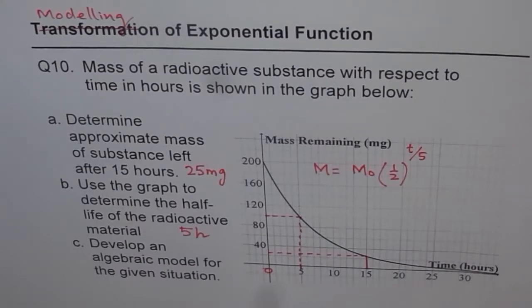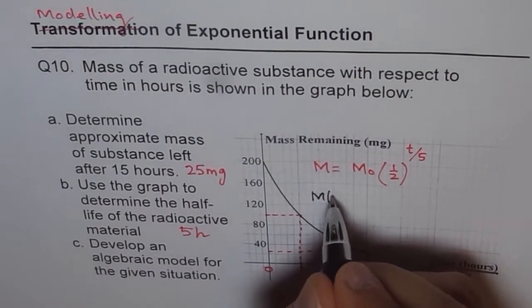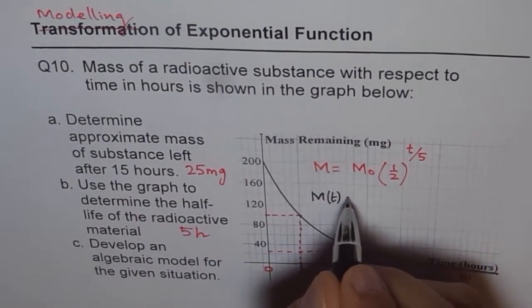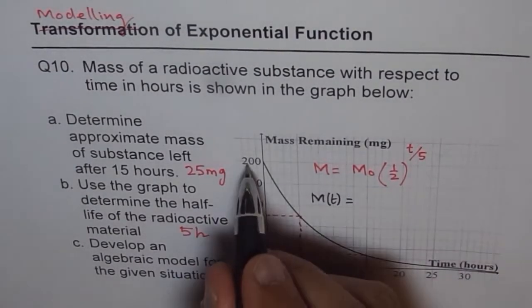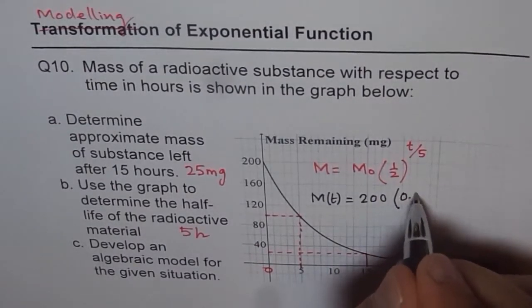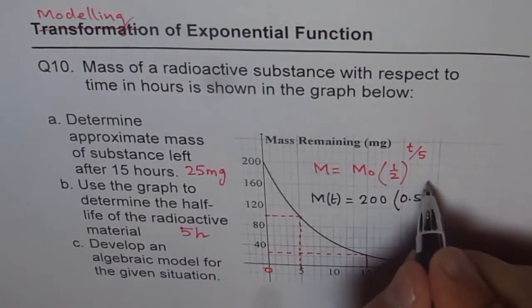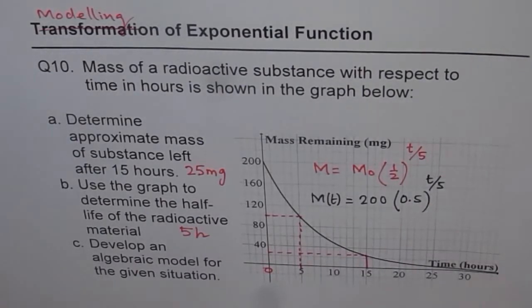So let me write that with the initial mass. We get now mass at any instance of time t as a function of time, which is in hours, equals initial mass of 200 times half, which is 0.5, or half you can write, t over 5. So that becomes our equation or the model for the given situation.